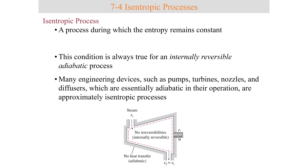The prior example problem went over being able to compute the entropy change of a system — the entropy change being the entropy at state 2 minus the entropy at state 1 that occurs during a process.